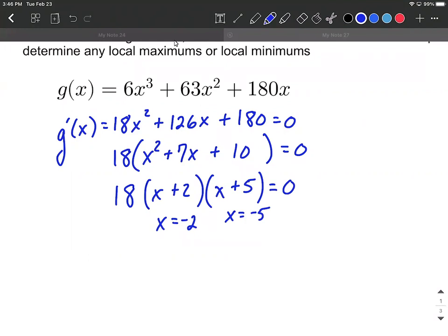These are what we refer to as our critical numbers, critical values is another way to say this. But these are the only values where we could have possible maximums or minimums.